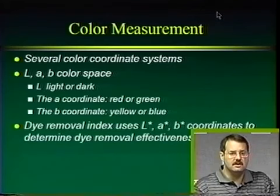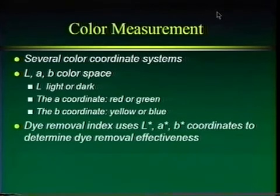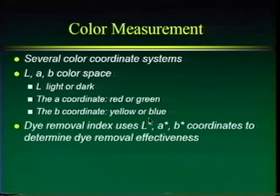We use color coordinate systems to determine dye removal effectiveness. One method is the dye removal index, which uses L*, A*, and B* coordinates in a calculation to determine how much dye has been removed — measuring the effectiveness of the bleaching process on samples before and after.